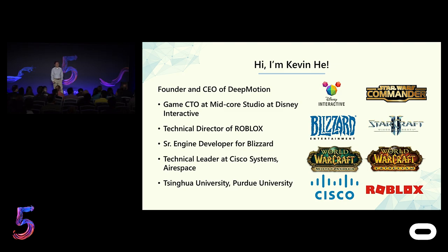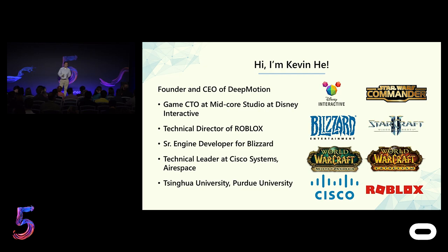My name is Kevin He. I started my gaming career as an engine developer at Blizzard Entertainment and we shipped a few games including World of Warcraft expansions, and our tech was used in Starcraft and other franchises at Blizzard. After Blizzard, I came back to the Valley and served as technical director for the physics platform at Roblox, where we developed a distributed physics system to support millions of kids playing online. After that, I took a technical role at Disney mobile team, shipping Star Wars Commander. Then I started Dimotion, focused on building interactive motion technology for deeply interactive, simulated characters in digital space.